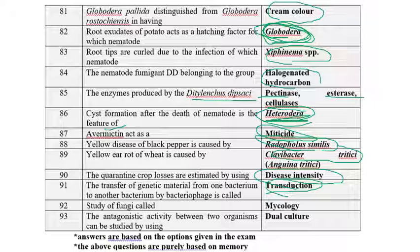There are three sexual phenomena in bacteria: conjugation, transformation, and transduction. Conjugation was discovered by Lederberg and Tatum in 1946 in E. coli. Transformation was discovered by Griffith in 1928 in Pneumoniae. Transduction was discovered by Lederberg and Zinder in 1952 in Salmonella. In transduction, a bacteriophage mediates gene transfer — hence it is called phage-mediated genome transfer.